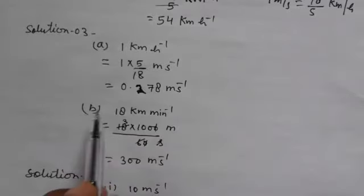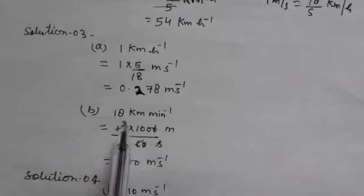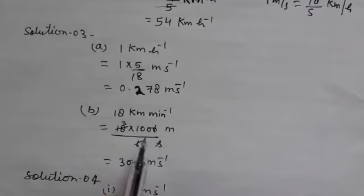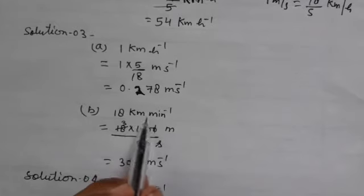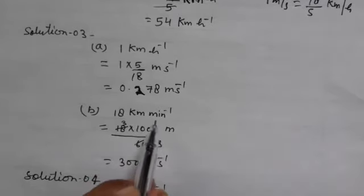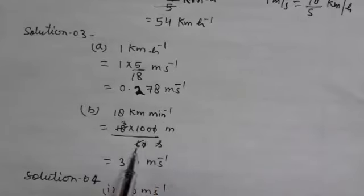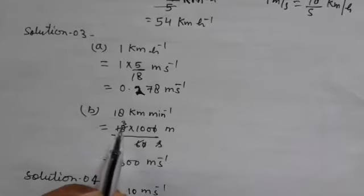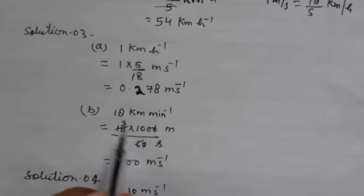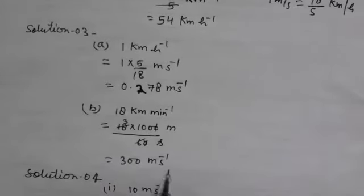Second part: 18 km per minute, change to meter per second. 1 km is equal to 1000 meters and 1 minute is equal to 60 seconds. After cancelling, 3 into 100 is equal to 300 meter per second.